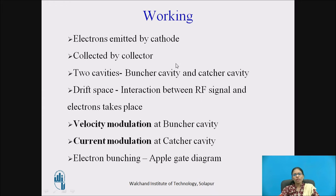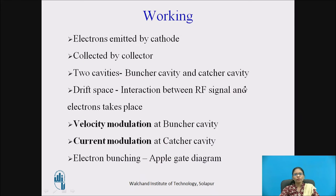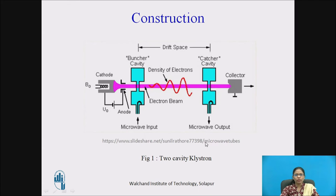Working: Electrons are emitted by the cathode and collected by the collector. There are two cavities — the buncher cavity and catcher cavity. Drift space is the space between the two cavities, and the interaction between the RF signal and electrons takes place in the drift space. Velocity modulation takes place at the buncher cavity, and current modulation takes place at the catcher cavity.